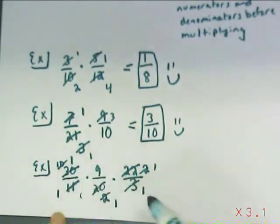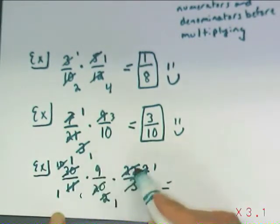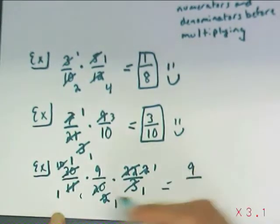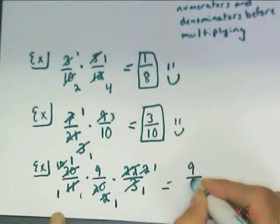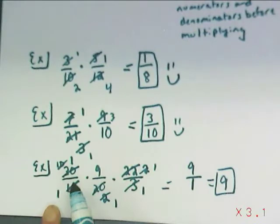If I have done this in all directions, top and bottom, I can go ahead and multiply 1, 9, 1. And on the bottom, I got a bunch of 1s. My answer is 9. And I never, ever had to multiply 30 by 9 by 22, nor these original numbers. So cross-simplification means that you save yourself a lot of work.